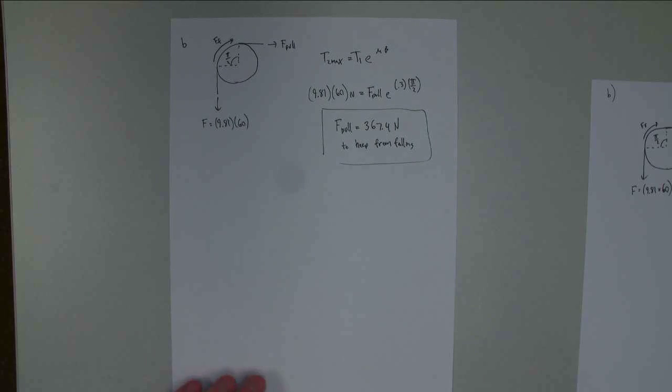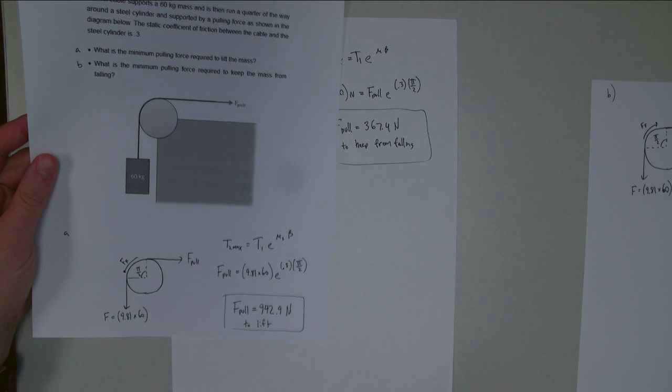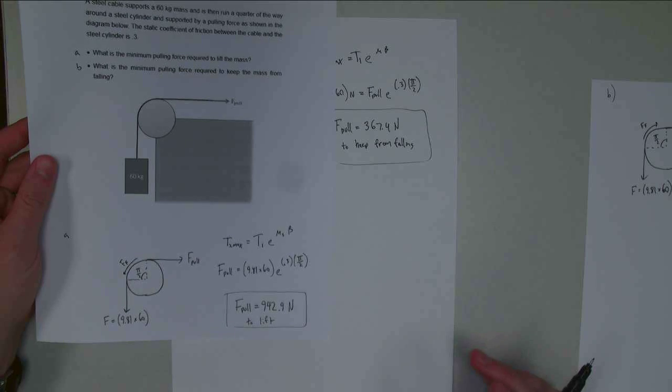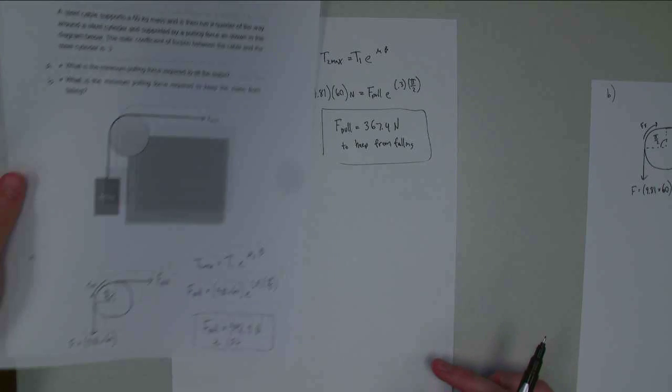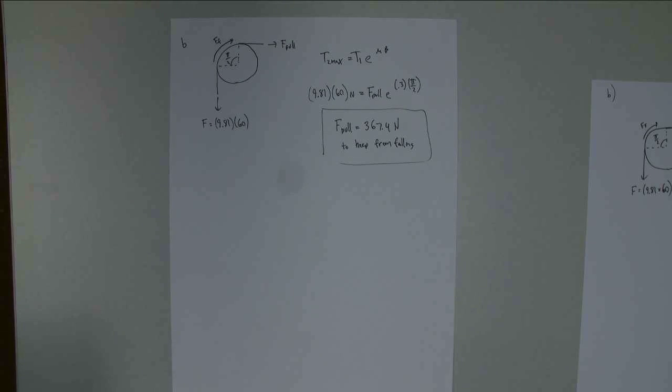So we can see that we needed about more than 900 newtons to lift the whole thing, but we need just more than 300 newtons to keep the whole thing from falling. So there's a whole intermediate range in there where, if we're pulling with somewhere between those two forces, it simply wouldn't go anywhere. Friction is going to be keeping it in place. So with that, we've solved our problem. Thank you for watching, and I hope to see you again.